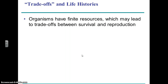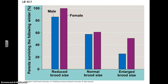Whenever you look at reproduction in organisms, there are always trade-offs. The goal is to produce lots of offspring, but it takes effort to produce all those offspring and in some cases to take care of them. So there's often a trade-off between how many you want to have and how many you actually have. We can see this in an experiment with these birds — this is the normal brood size and these are the percent surviving.